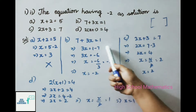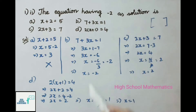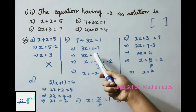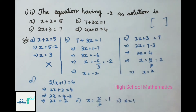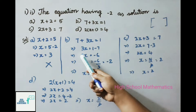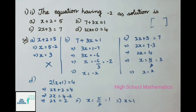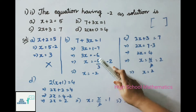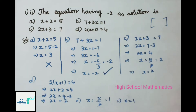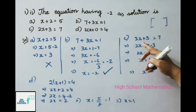Second equation: 7 + 3x = 1. Transposing 7: 3x = 1 - 7 = -6. Transposing 3: x = -6 ÷ 3 = -2. So option B is our solution.